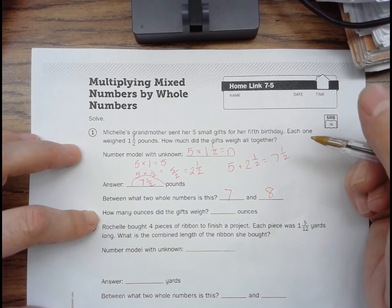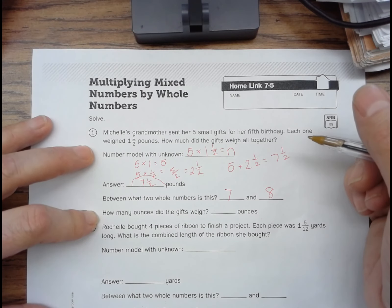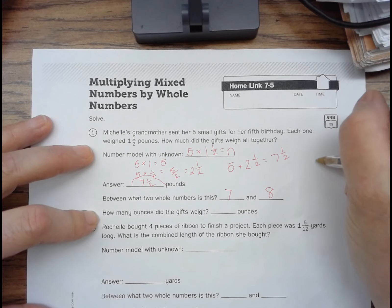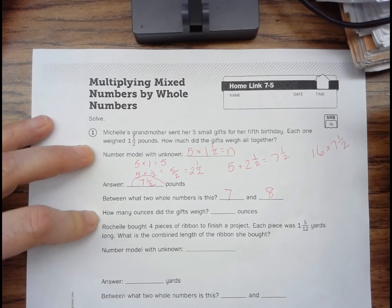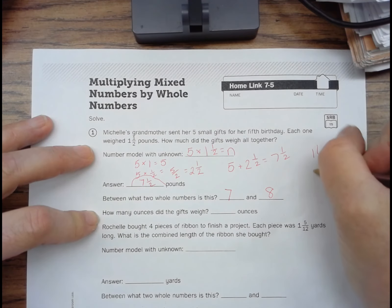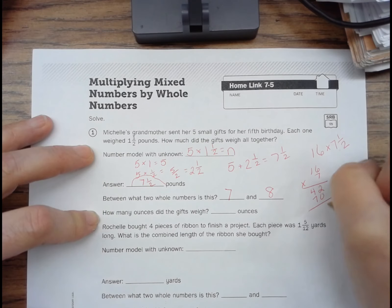So we remember that one pound is equal to 16 ounces. So we're going to have to multiply 16 times seven and a half. So we'll start off doing 16 times seven. Seven times six is 42. Seven times 10 is 70. So that's 112.